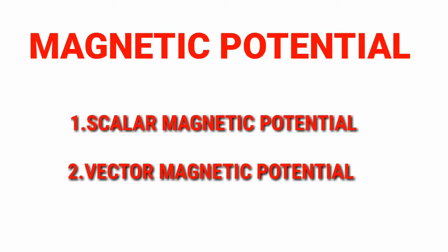Magnetic potential refers to either vector magnetic potential or scalar magnetic potential. Both types of magnetic potentials are alternate ways to express the magnetic field, that is B or H, in a form that may be more convenient for calculation or analysis. This is similar to how the electric field intensity E can be conveniently re-expressed in terms of electric potential. Magnetic potential is used to represent the magnetic field, and it will be of two types: one is vector magnetic potential and the other is scalar magnetic potential. Both are used to represent the magnetic field.